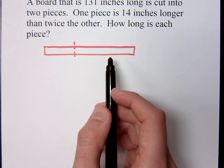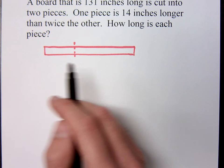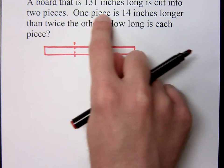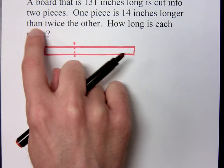In this one, what's the piece we know nothing about? The short piece or the long piece? The short piece. We know nothing about the short piece. We know the long piece, though, is related to it by being 14 inches longer than twice that guy.